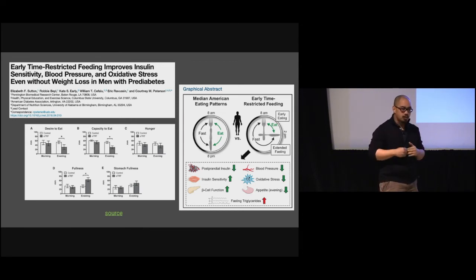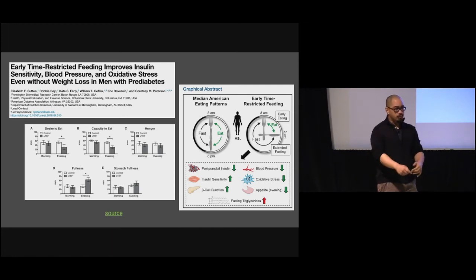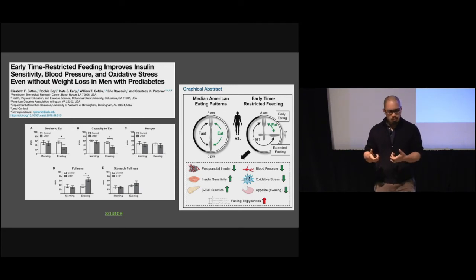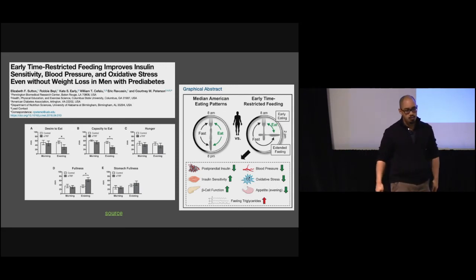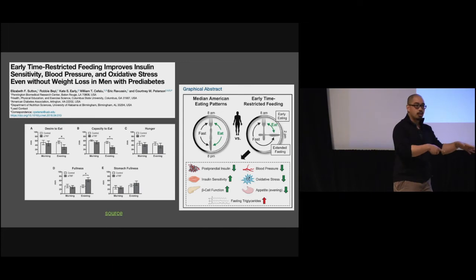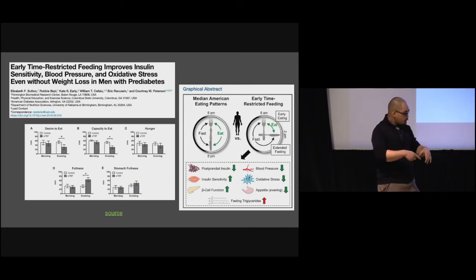If you take the 500-calorie reduction goal to someone who's eating 1,700 calories a day, it'll be tough but doable. What if they're eating 1,200 already? You can cut 500, but now you run the risk of malnutrition outside of weight loss. Fasting is your alternative in those cases.